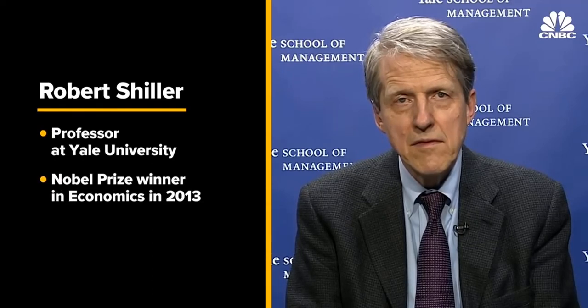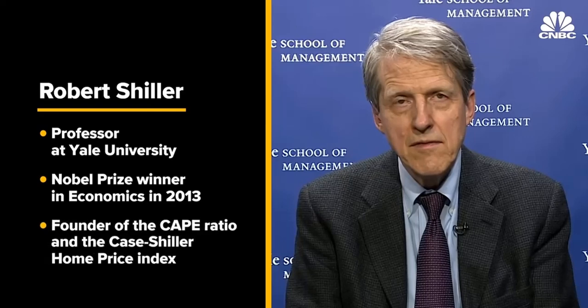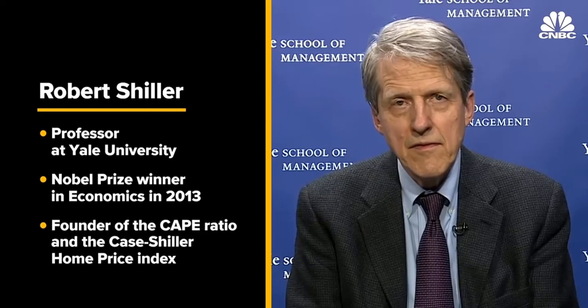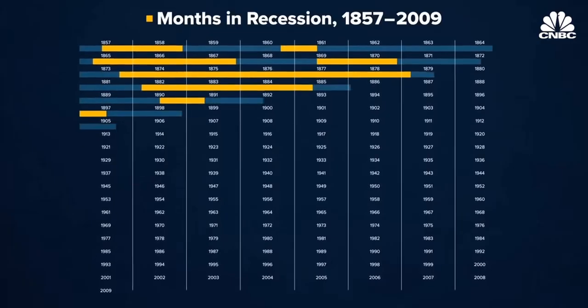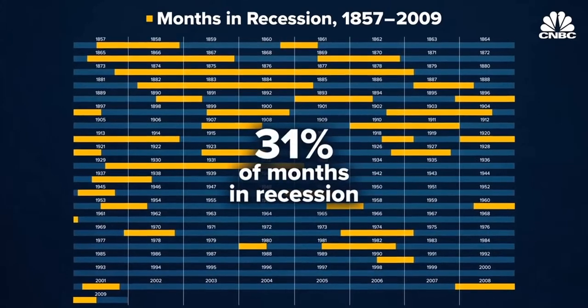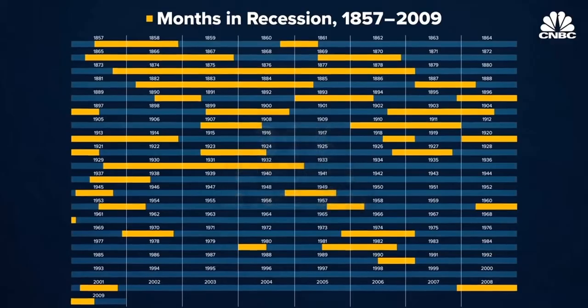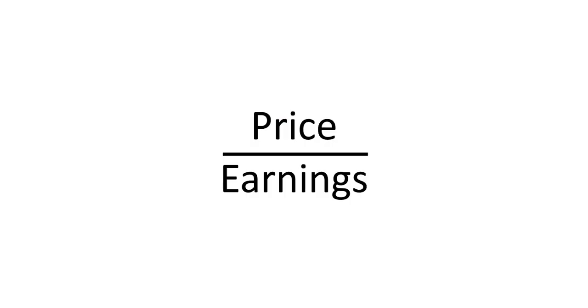Robert Schiller is a 2013 Nobel Prize winner in economic sciences. He's well known for his work in asset pricing as well as behavioral finance. One of his biggest contributions is the cyclically adjusted PE, also known as the Schiller PE ratio.